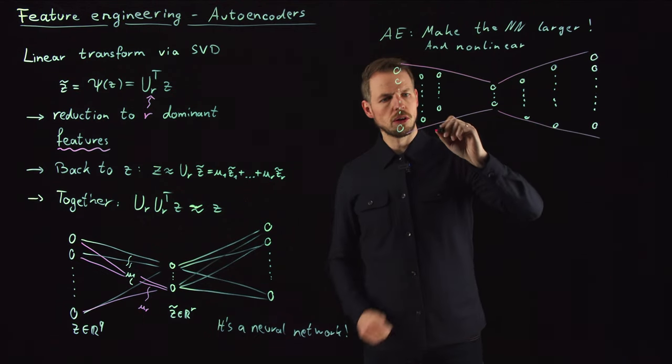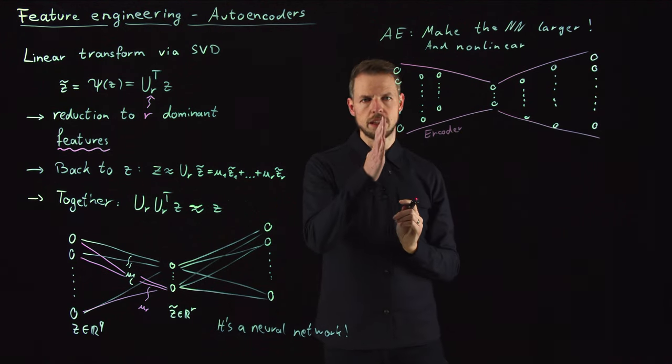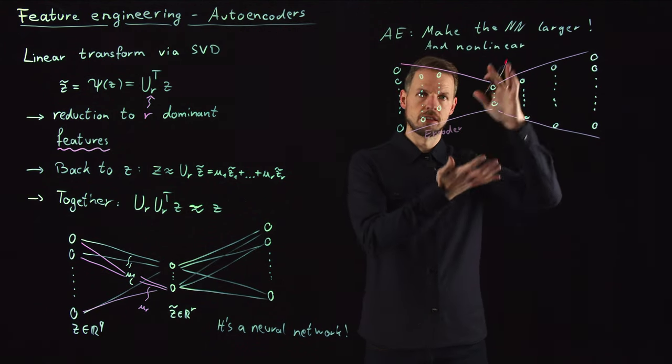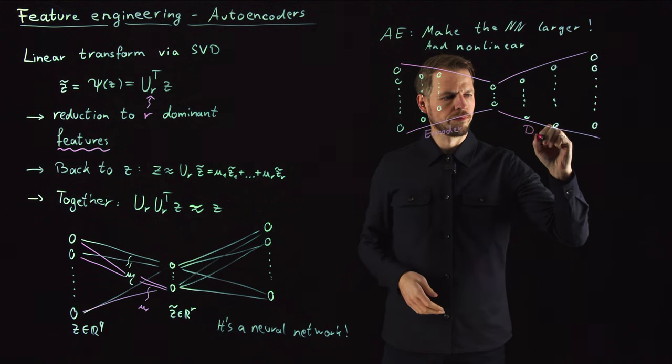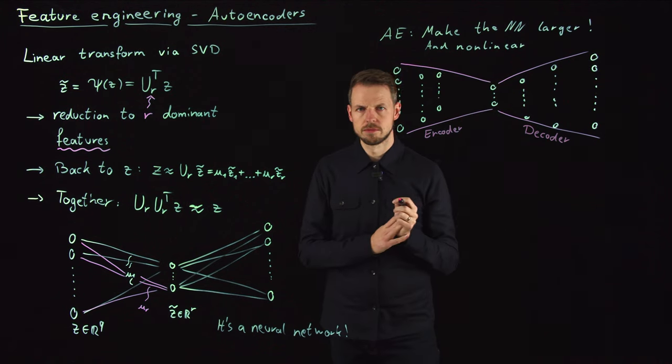This is what we call the encoder and decoder. The encoder takes the input and encodes it into a latent space, some representative in a smaller dimensional space. Then we have the decoder that takes us back to the original state.